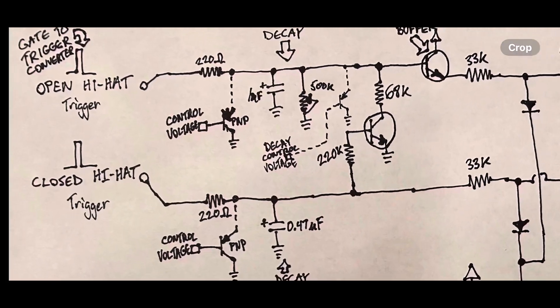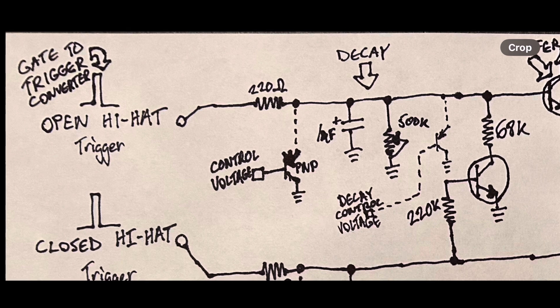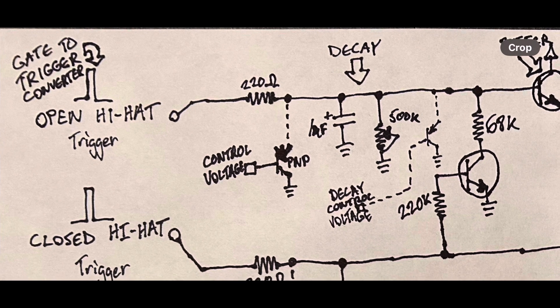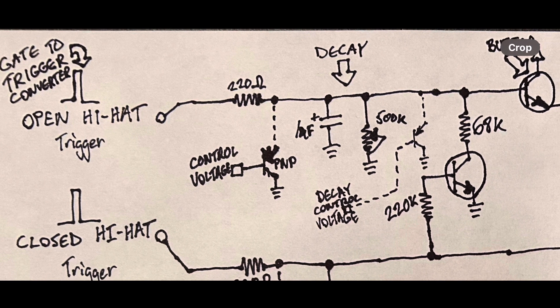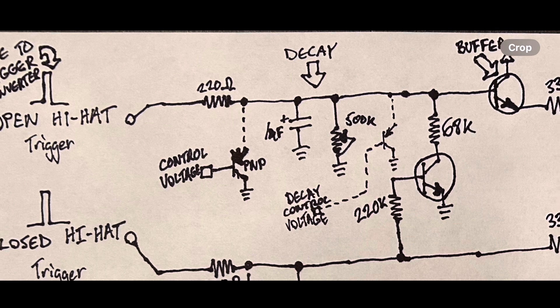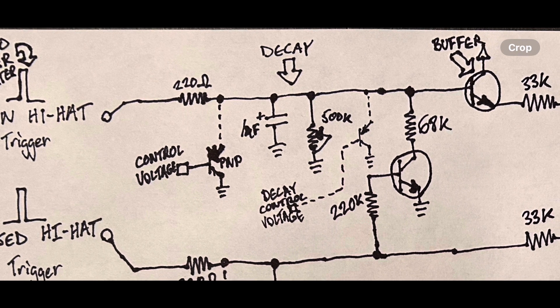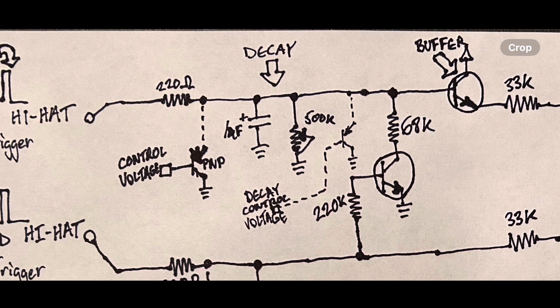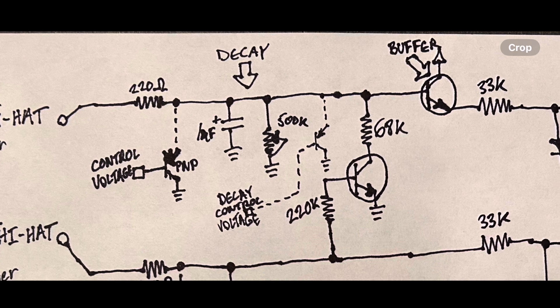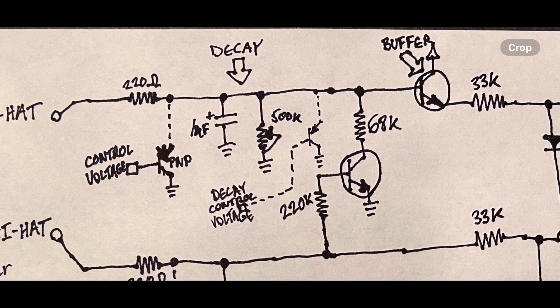The open hi-hat envelope generator is virtually the same thing as the closed hi-hat, except that it has two extra components, which is a larger capacitor and a 500k potentiometer, and the output of which is buffered with a buffering transistor.